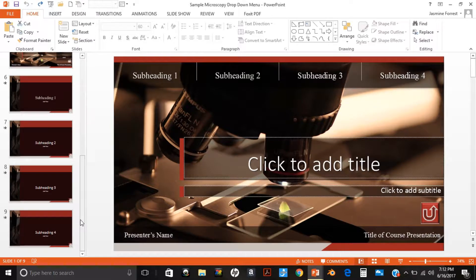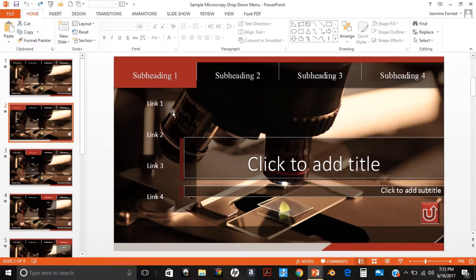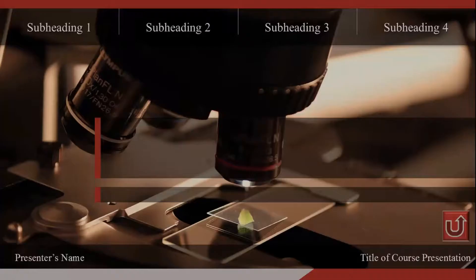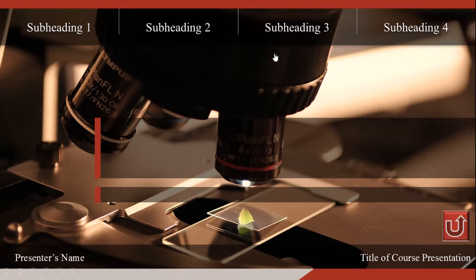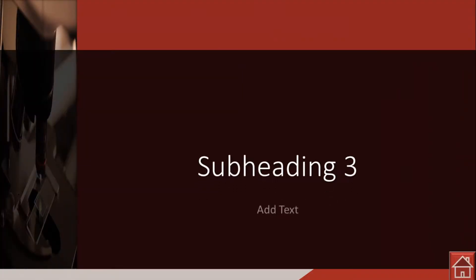The menu slides contain the title and the four subheading buttons, which will be the four main sections of your PowerPoint presentation. Under each of the four subheading buttons, there are four link buttons, which will be the subsections under each of the four subheadings. When you start your presentation show, you can see that your subheading buttons are already hyperlinked, because when you click on them, they go to your content divider slide.